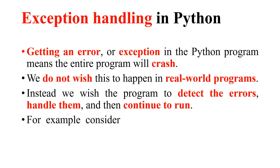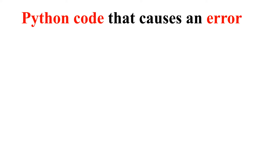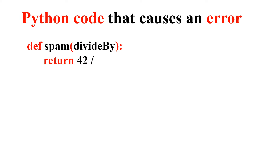That is the beauty of exception handling in Python. For example, we'll consider a program which has a divide-by-zero error — I've written a small code which causes a divide by zero, meaning I'm trying to divide a number by zero. First we'll see the code with the error, then we'll see how to handle it. The function definition uses the keyword `def`, the function name is `spam`, and `divide_by` is the parameter. It returns 42 divided by `divide_by`.